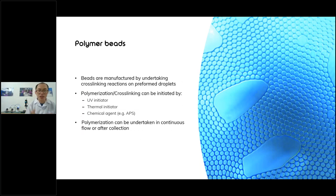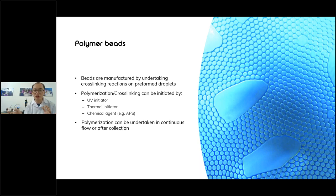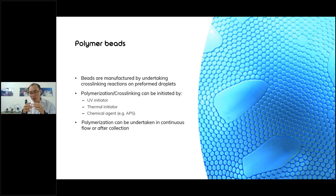This slide shows how polymer beads can be produced using microfluidics. The beads are manufactured by undertaking a cross-linking reaction or polymerization reaction on pre-formed droplets. The polymerization or cross-linking reaction can be initiated by UV irradiation, chemical initiator, or chemical reagent, and this can happen during the continuous process or even after collection in the vessel.